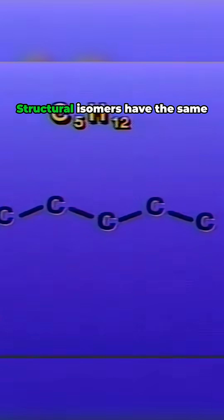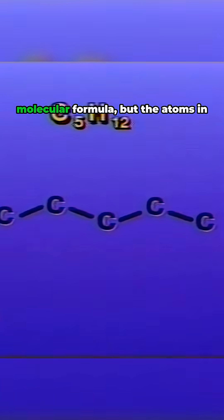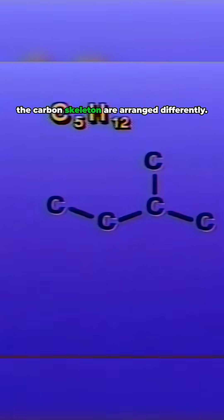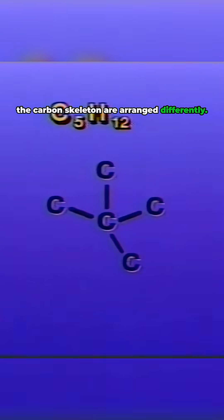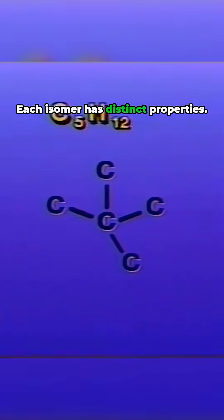Structural isomers have the same molecular formula, but the atoms in the carbon skeleton are arranged differently. Each isomer has distinct properties.